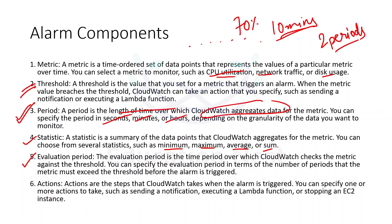The last component of an alarm is action. Actions are the steps CloudWatch will take once the alarm is triggered. You can specify one or more actions such as sending an email notification, adding EC2 instances for auto scaling, executing a Lambda function, stopping the EC2 instance, stopping the RDS, etc. These are the different kinds of actions we can have against an alarm trigger.